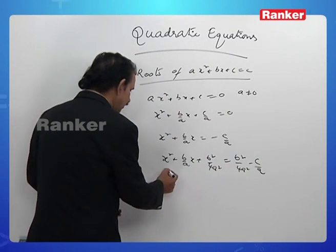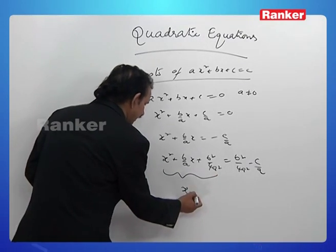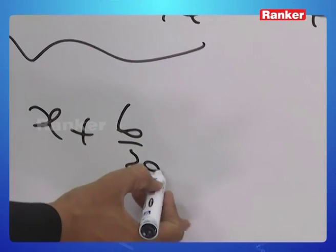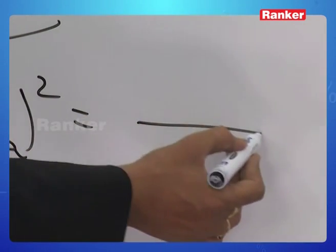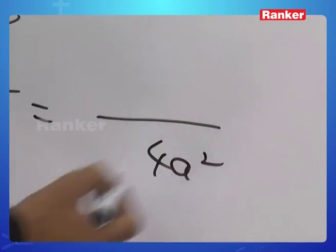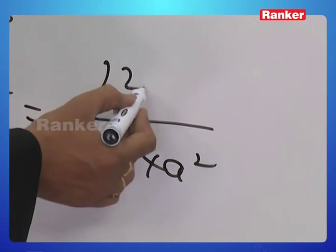You can easily look at this expression. This is just nothing but (x plus b/2a)² equals, what is the LCM here? 4a². So b² minus 4ac over 4a².